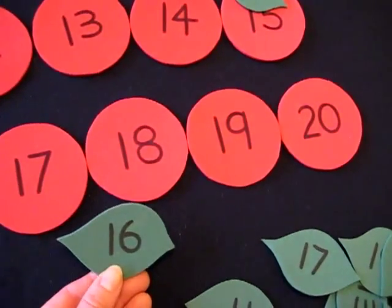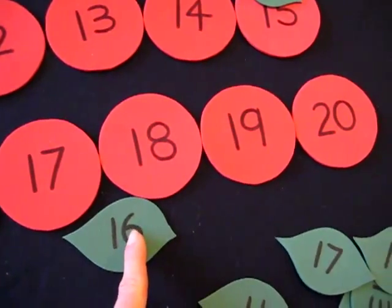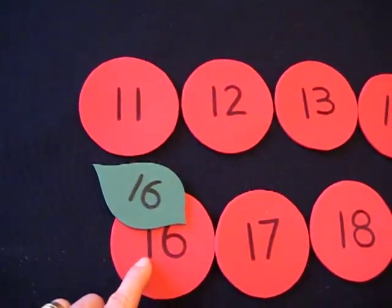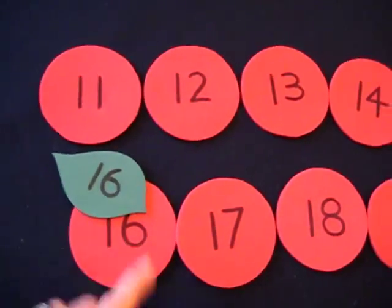So I give her the number 16. She hears the number 6 there, so she looks out for the 6. I tell her 16. There's the teen, and he has a 6 friend.